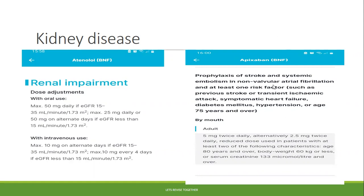For Apixaban, this is for prophylaxis of stroke. With anticoagulants, the BNF lists different indications — you can give them for prophylaxis of stroke or systemic embolism, as a treatment dose for DVT or PE, or for prophylaxis of DVT or PE. You have to check the right indication. Here, the question states it is for non-valvular AFib, so we check that section. If it were PE or DVT, we would check a different section.